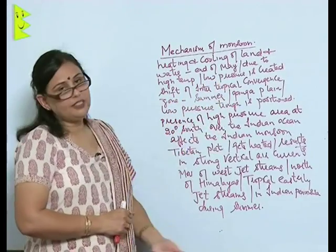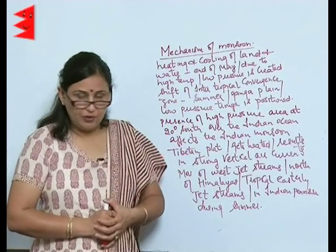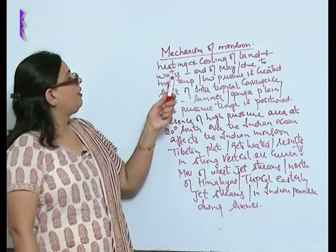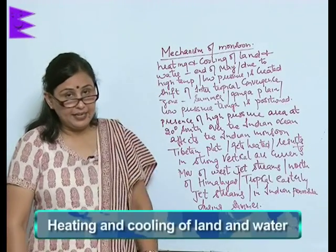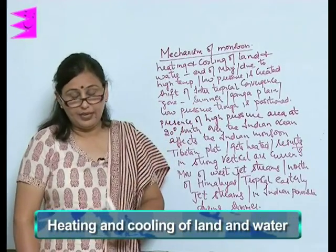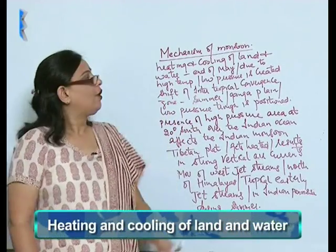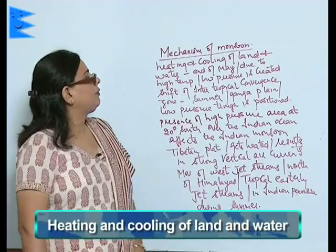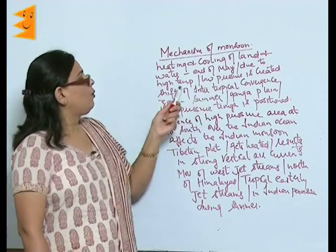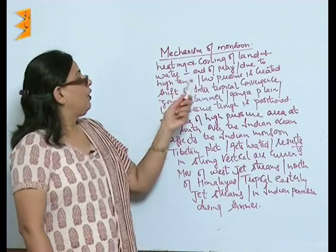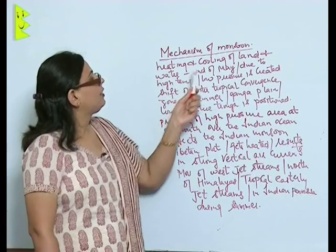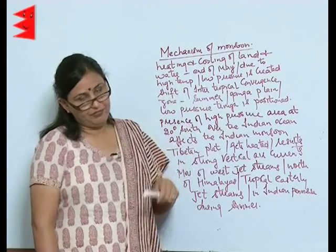There are certain factors which are responsible for the monsoon in India. The first is the intense heating and cooling of land and water. At the end of May, due to high temperature, low pressure is created and this makes a lot of difference.